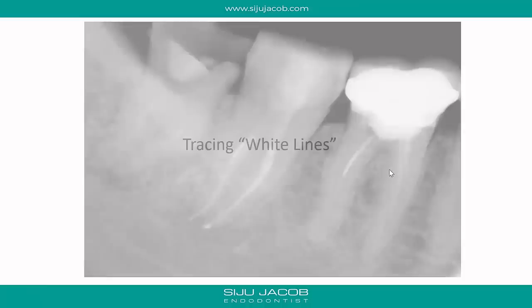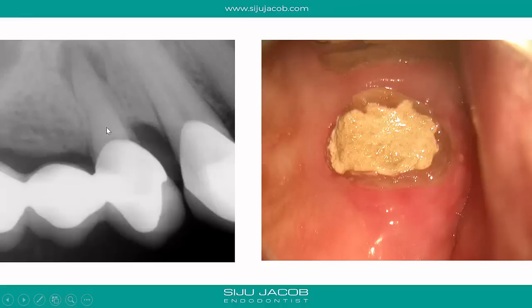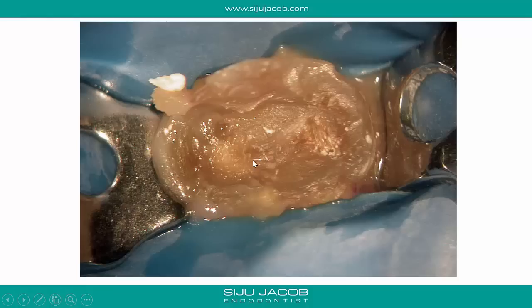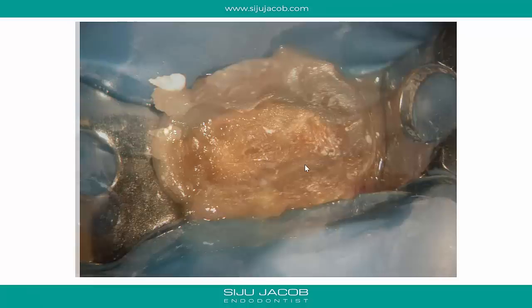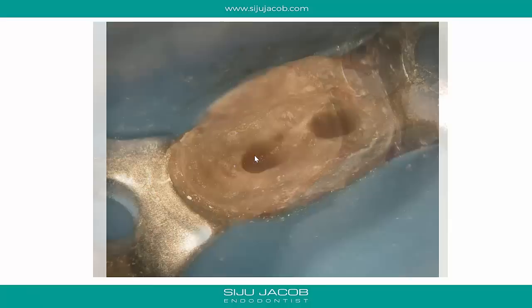The second technique for posterior teeth is tracing white lines. In posterior teeth there are white lines which sometimes connect canals. In a maxillary first premolar where we removed the bridge and found a completely obliterated pulp chamber, we take a MUNSBUR and slowly move in a buccal-palatal direction until a white line appears. We then trace the ends of these white lines to look for the canal — which is what we did, and that's where we found the canals along the white line.